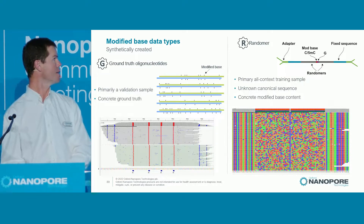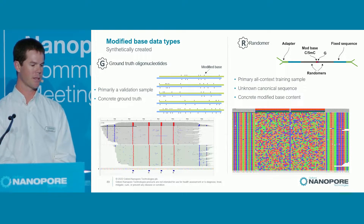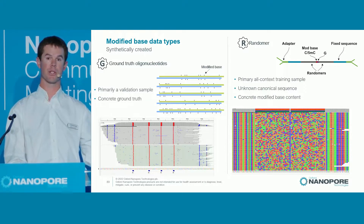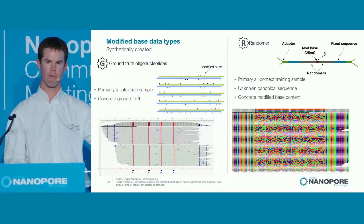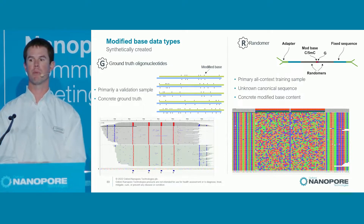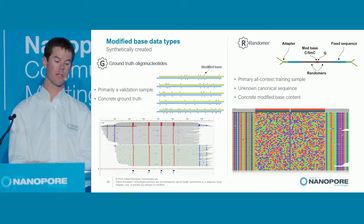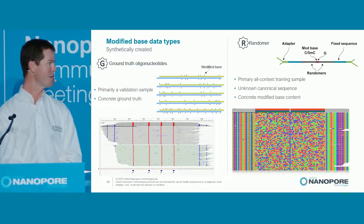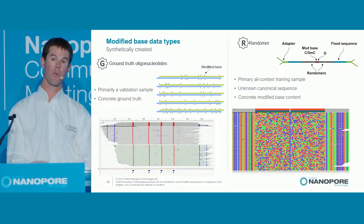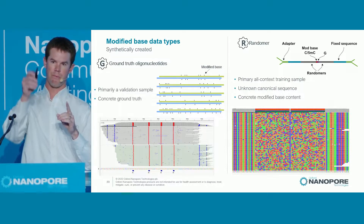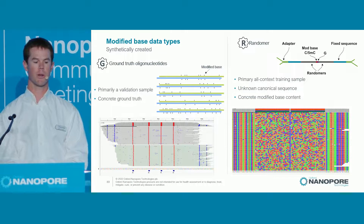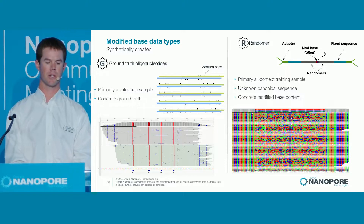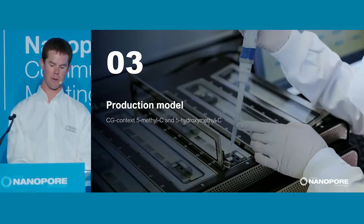Ground truth oligonucleotides are a great validation sample — we have a really concrete ground truth and don't have to compare to any other technology. We know that every base is modified or every base is canonical, and this is what we base most of our accuracy metrics on. Our primary all-context training sample uses printed bases with random bases and a fixed position in the center, where we place a modified base or a canonical base. These are really great because we can get all contexts into training.